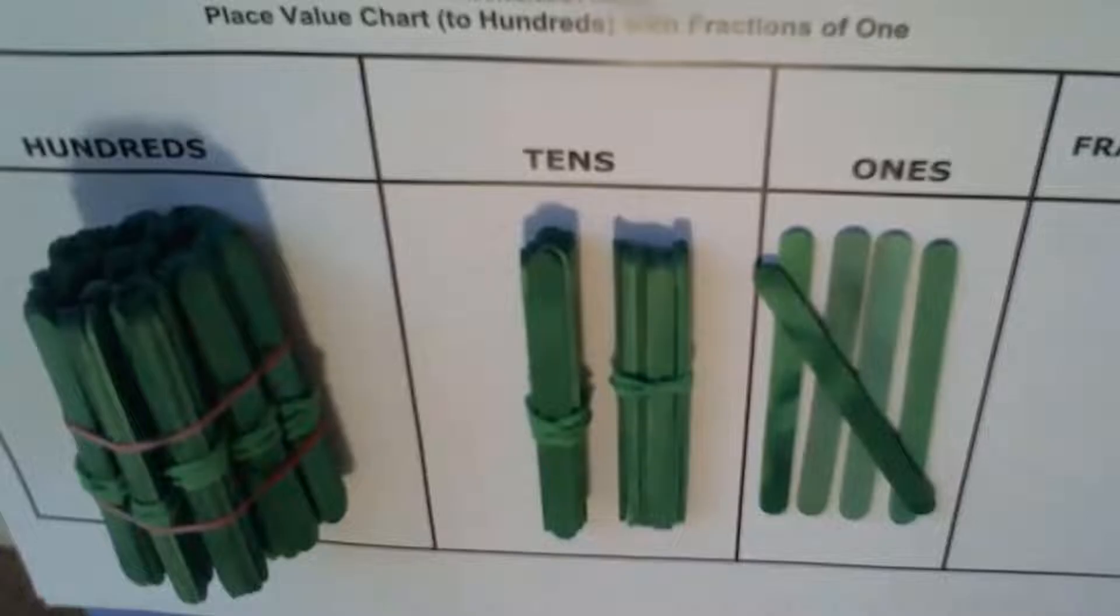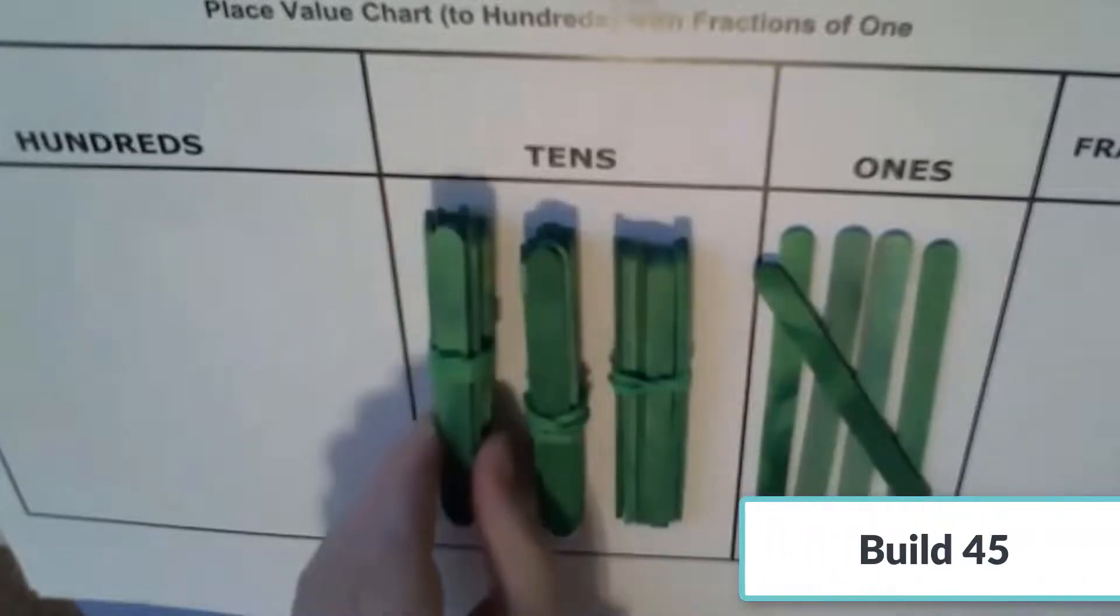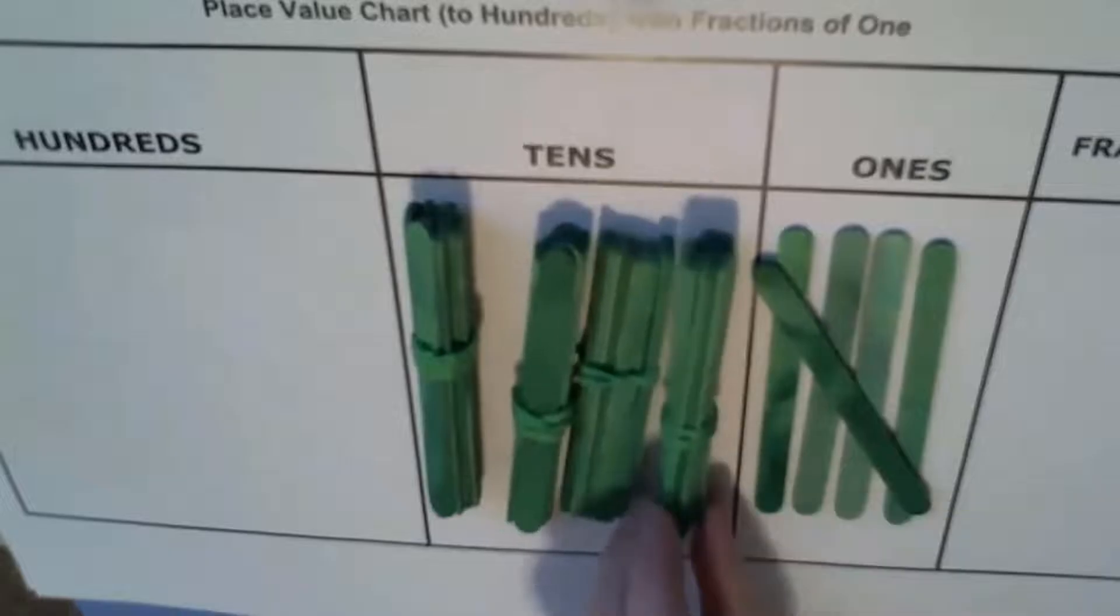We then manipulate and read quantities one place value at a time, adding and taking away groups of ten or hundreds, eventually working towards fractions of one. Here in this video, you can see that we break a craft stick to create a half.